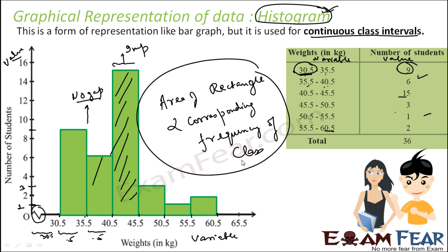This is the concept of histogram. It is typically used for continuous class interval. To do this, we draw the class interval of the variable on the x-axis and frequency on the y-axis. The width matters, there should be no gap between two bars, height and width both matter, and the area of the rectangle corresponds to the frequency of the class.